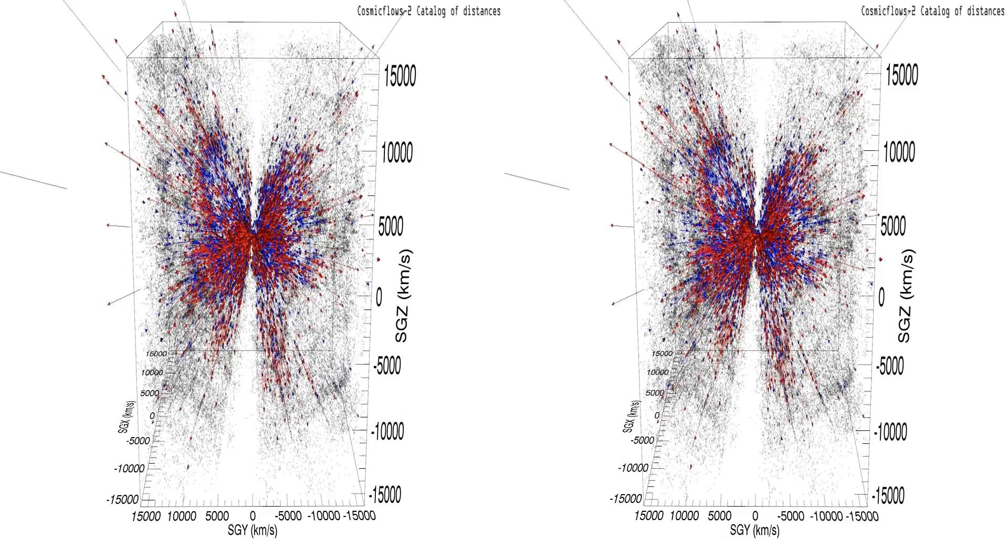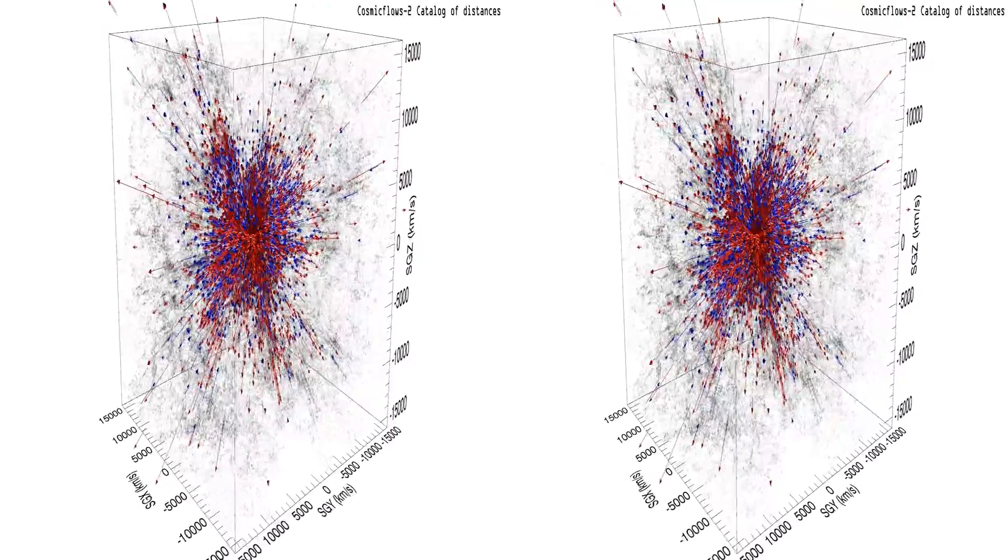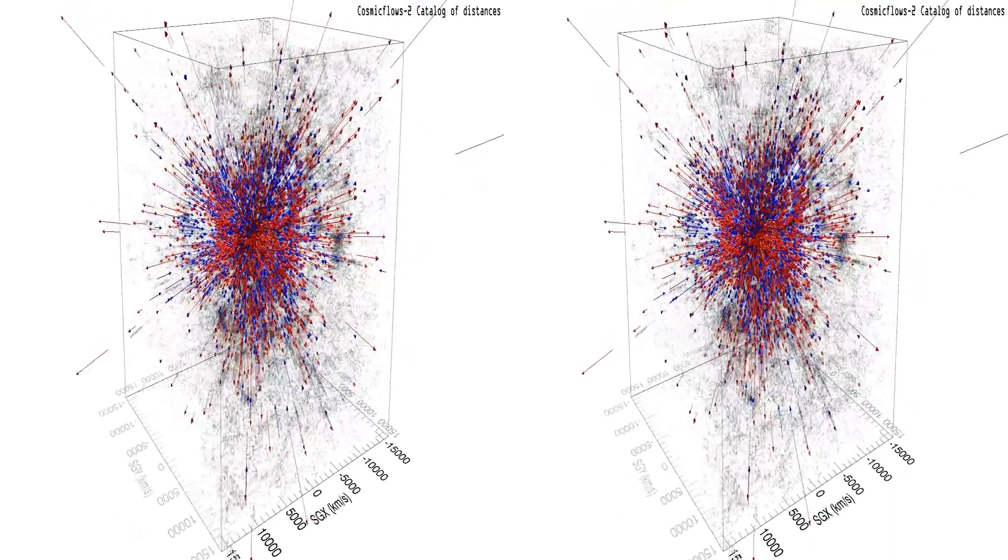Cosmic flows two peculiar velocity measurements are superimposed during this half rotation. Gravitational peculiar motions towards us are in blue and motions away are in red.